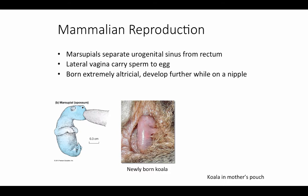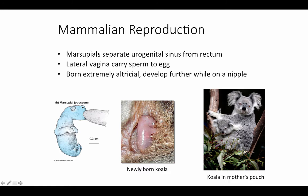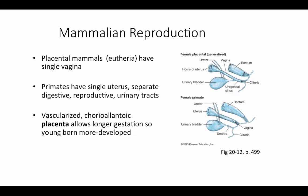Marsupials are born at a very, very early stage of development. The two things that are very well developed in a newborn marsupial joey are the forelimbs and the mouth. This tiny underdeveloped newborn joey has to crawl and climb from the birth canal into the marsupium — the pouch — where it attaches to a nipple to continue its development. It needs highly developed front limbs to make that journey and a very well-developed mouth to attach to the nipple and suckle. A newborn baby koala basically looks like a fetus with forelimbs and a mouth, finishing its development in the pouch.